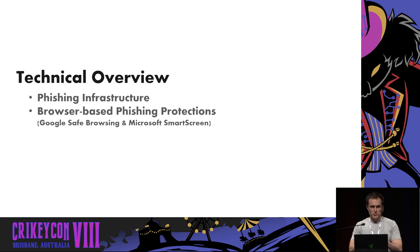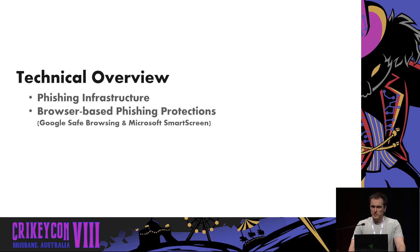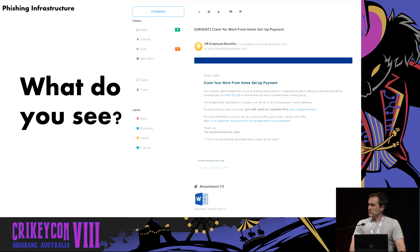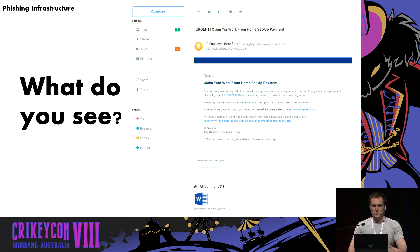Now that we've gone through the 101 of what phishing is, let's get into the technical overview of essentially what infrastructure is typically involved in performing these attacks, and the protections available to you as the end user. Looking at that example phishing email, I actually see three different infrastructural components that facilitate the successful delivery and compromise of an end user.